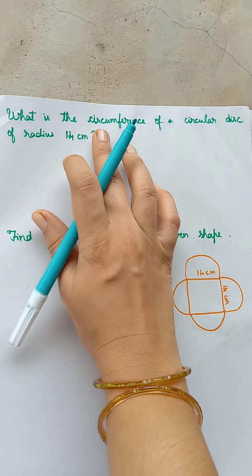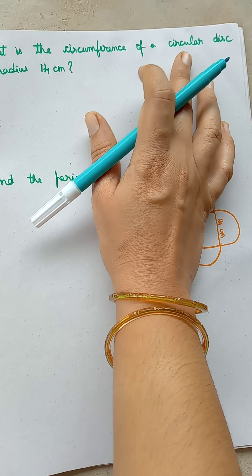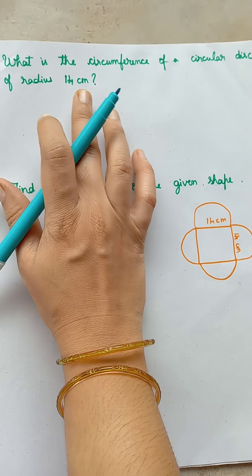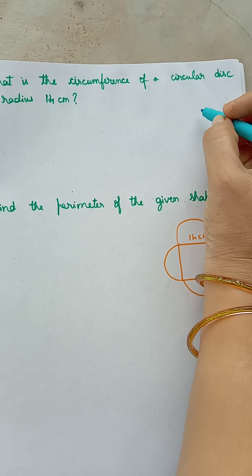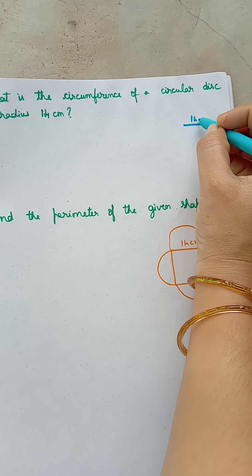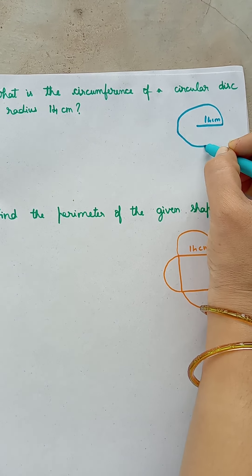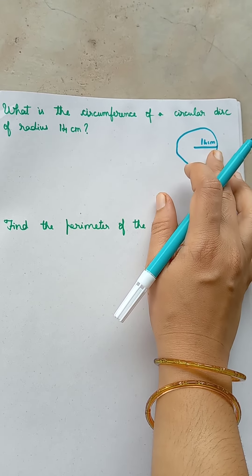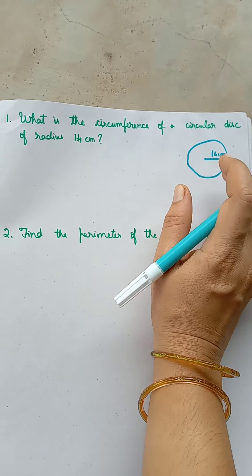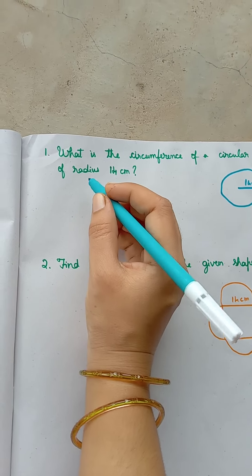What is the circumference of a circular disk of radius 14 cm? So they have given radius is 14 cm. A circular disk has radius 14 cm. You need to find the circumference of this circle.